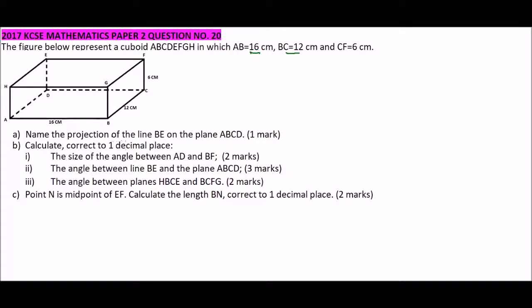Name the projection of the line BE on the plane ABCD. So this is our plane A, B, C, and D. And this is our line from B to E. Now we say that the projection of this line is a line that will fall onto the plane ABCD. So the line BE, the projection is line BD. Let me show you the line BD. So this is a projection BD, and you can see BE can fall down onto BD.